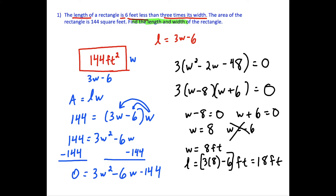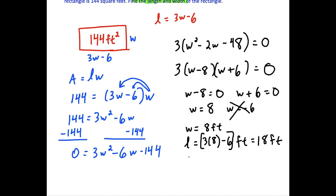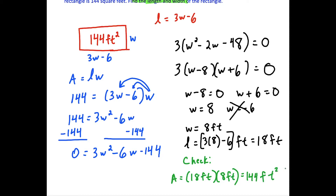To check our answer, we verify: area equals length times width, which is 18 feet times 8 feet. 18 times 8 equals 144, and feet times feet is feet squared. So 144 square feet checks out, confirming this is the correct answer.